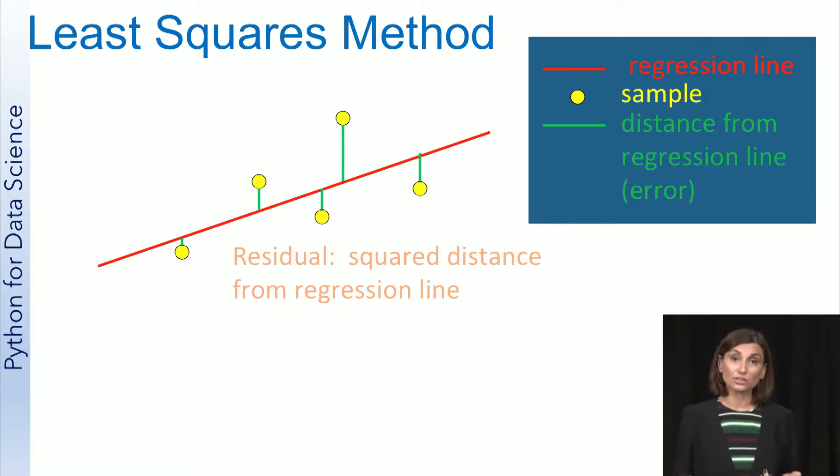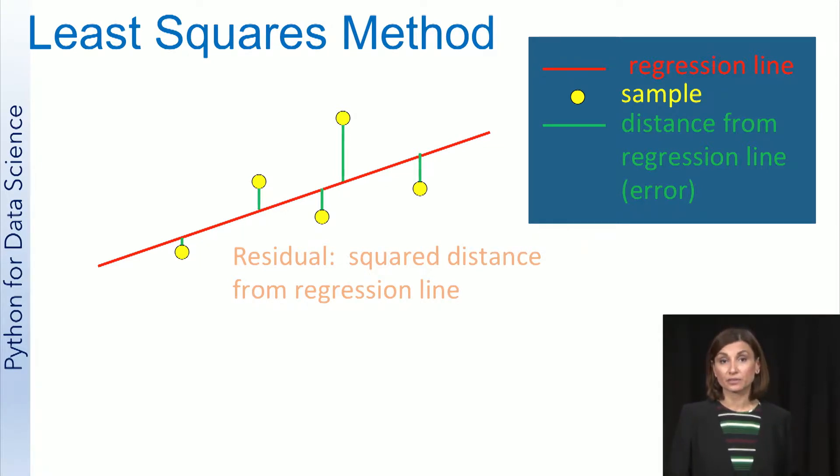In other words, we want to find the line that minimizes the sum of the squared errors of prediction. The goal of linear regression, then, is to find the best fitting straight line through the samples using the least squares method.